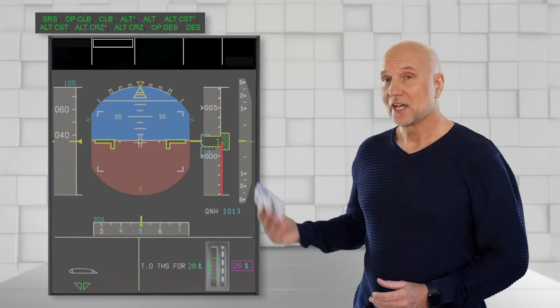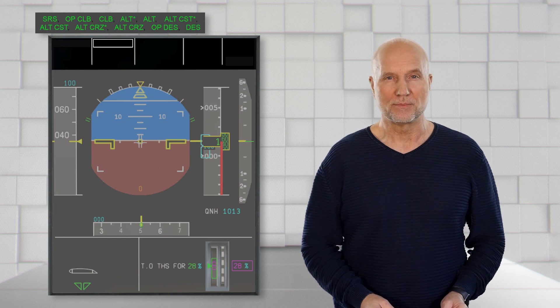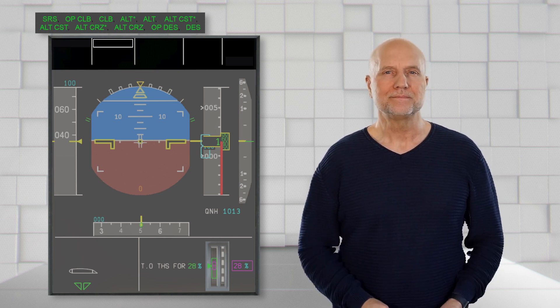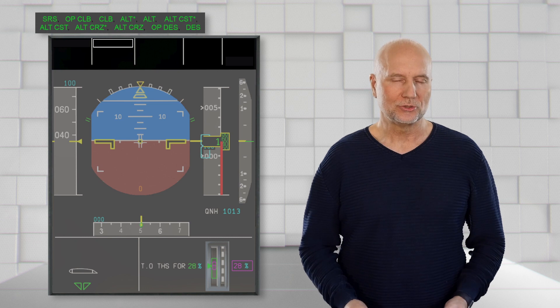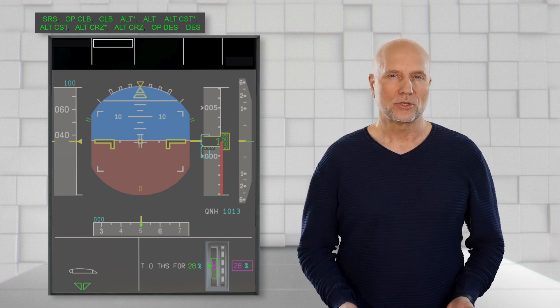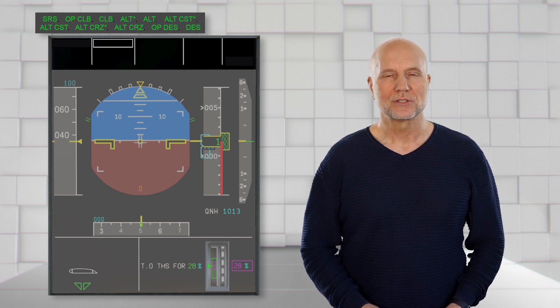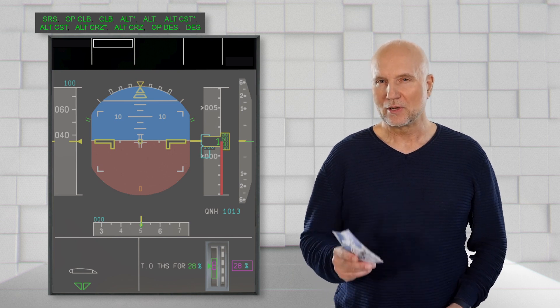We see here a quick summary of the most important active vertical modes: SRS, Open Climb, Climb, Altitude Star, Altitude, Altitude Constrain Star, Altitude Constrain, Altitude Cruise, Open Descent, and Descent. A quick reminder: active modes are always displayed in green color.